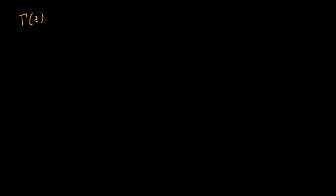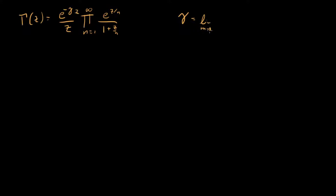In this video I want to look at the Weierstrass product definition of the gamma function. That says that gamma of z is equal to e to the minus little gamma z, where this little gamma is the Euler-Mascheroni constant, times this infinite product from n equals 1 to infinity of e to the z over n divided by 1 plus z over n. This Euler-Mascheroni constant is defined to be the limit as m goes to infinity of 1 plus 1/2 plus 1/3 plus dot dot dot plus 1/m minus log m.